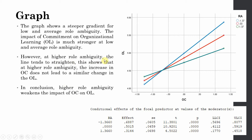However, at higher role ambiguity the line tends to straighten, showing that an increase in organizational commitment does not lead to a similar change in organizational learning. In conclusion, higher role ambiguity weakens the impact of OC on organizational learning. Although the relationship is significant at all three levels, it is weakening at a higher level of role ambiguity.